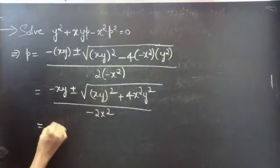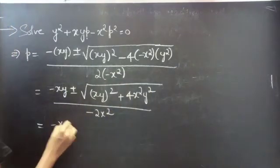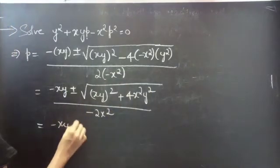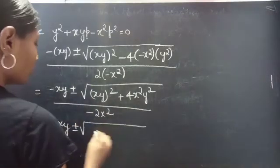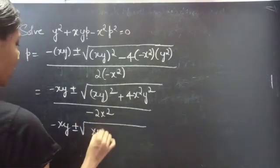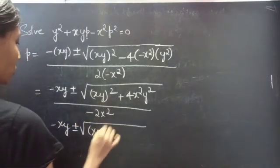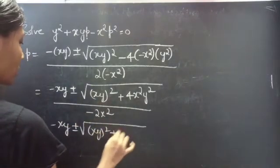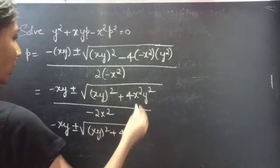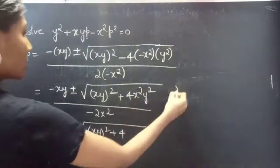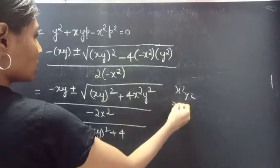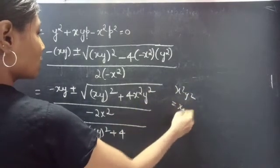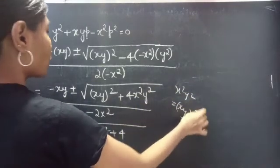This simplifies to minus xy plus or minus square root of (xy) squared plus 4·(xy) squared, since x squared·y squared can be written as (xy) squared, all divided by minus 2x squared.